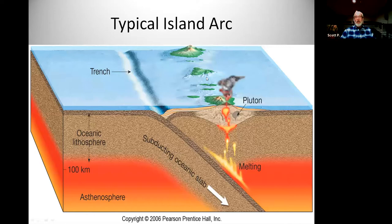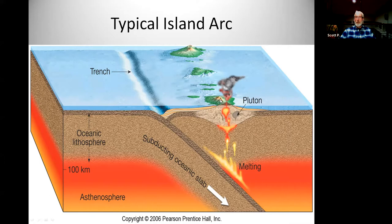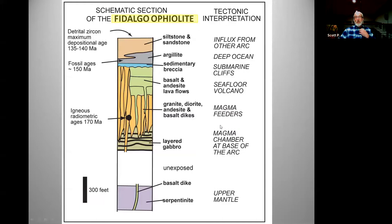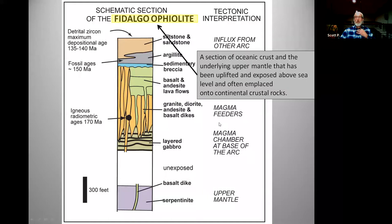I'm going to zero in on island arcs a little bit more. Ocean plate subduction generates magma, which rises up into the top or middle part of the oceanic crust and most of the time creates a volcano — which may be submerged. This is something like some of the real old rocks on Orcas Island, but also the Fidalgo Ophiolite. Here's a stylistic cross-section of the Fidalgo Ophiolite — and there's that word Ophiolite. It's a section of oceanic crust and the underlying upper mantle that's been uplifted and exposed above sea level, often emplaced onto continental rocks.